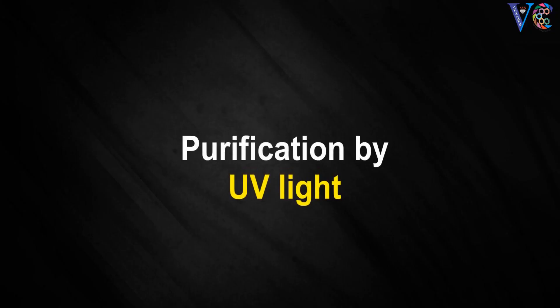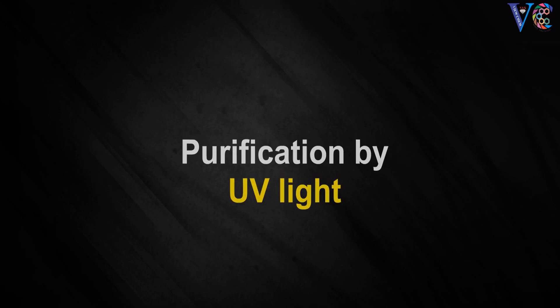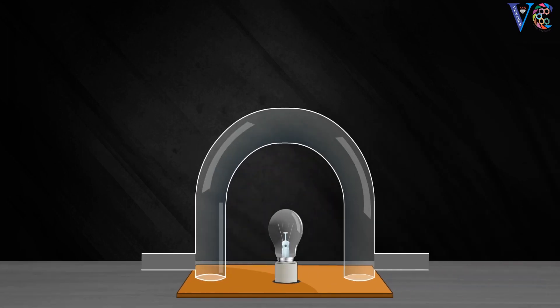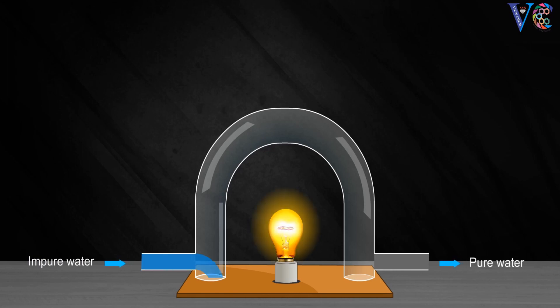Purification by UV light. The impure water is passed through a tube and exposed to UV radiation. In the process, the disease-causing organisms are either killed or deactivated.